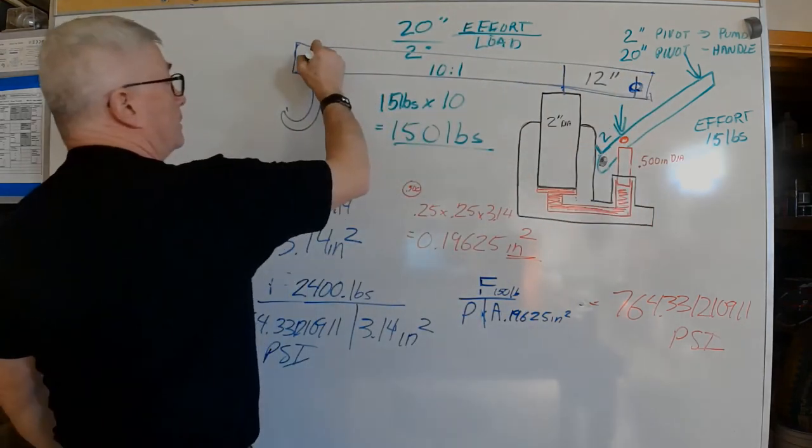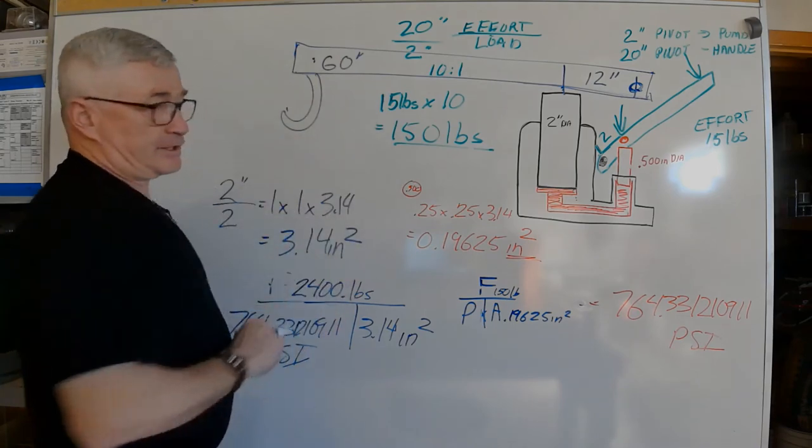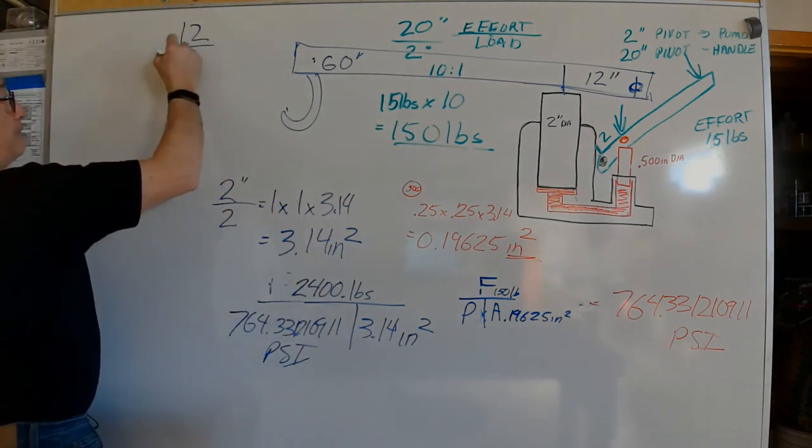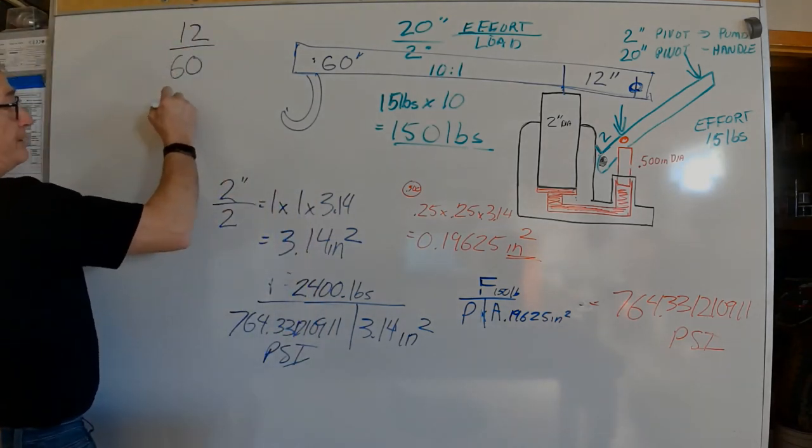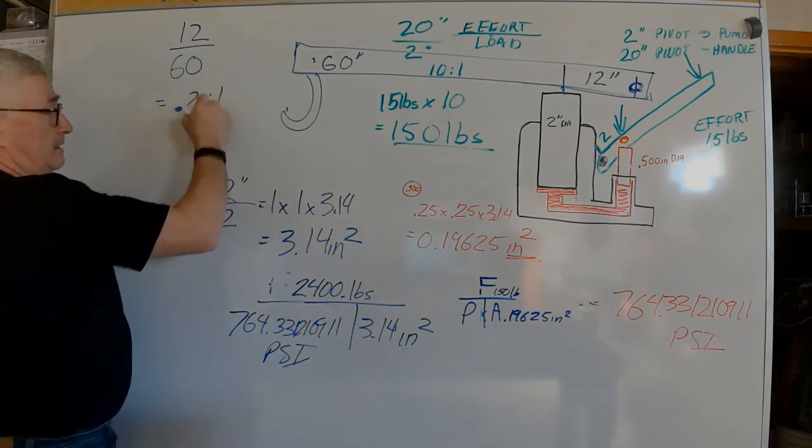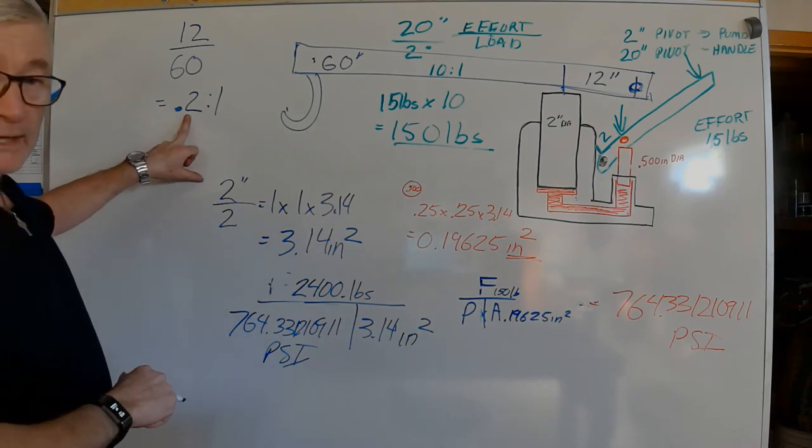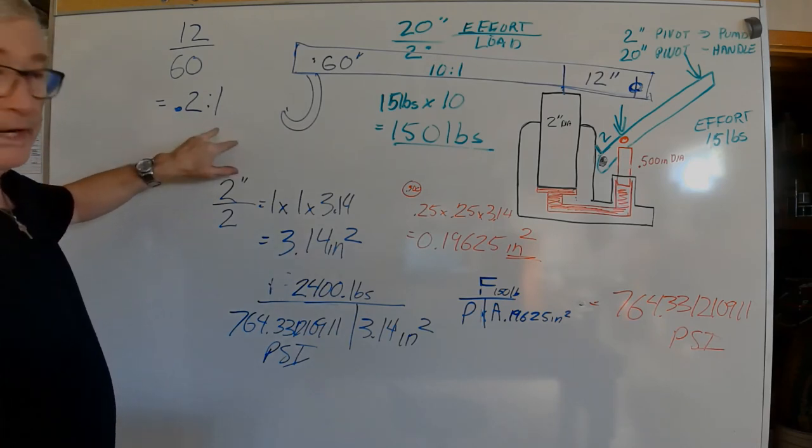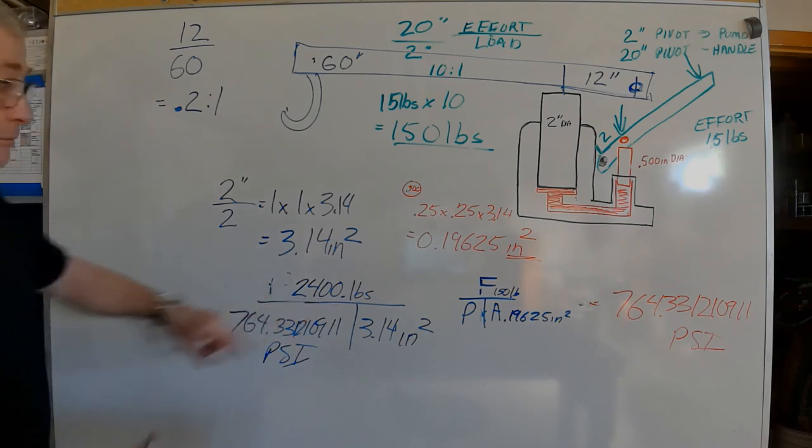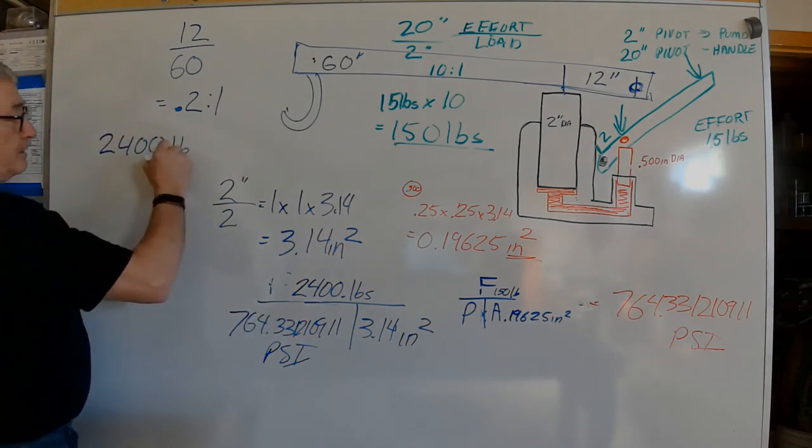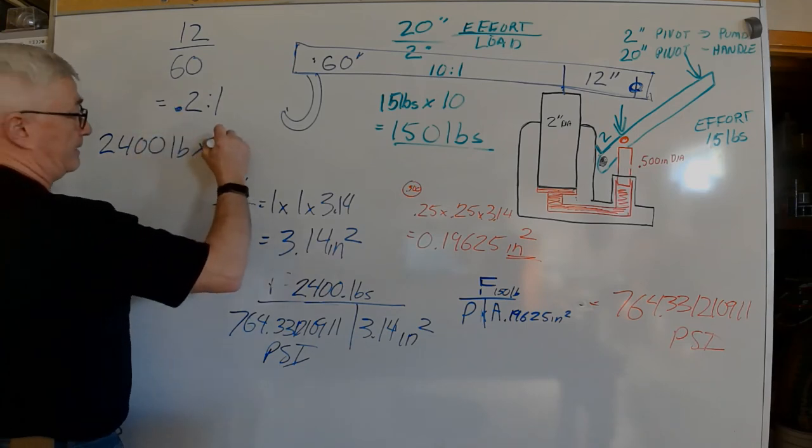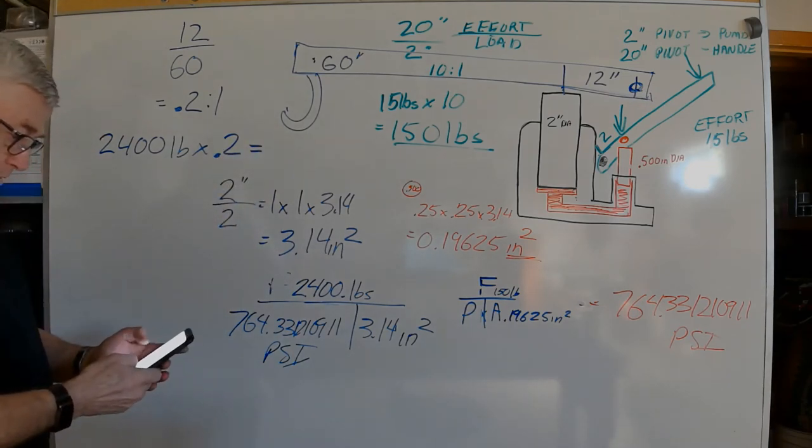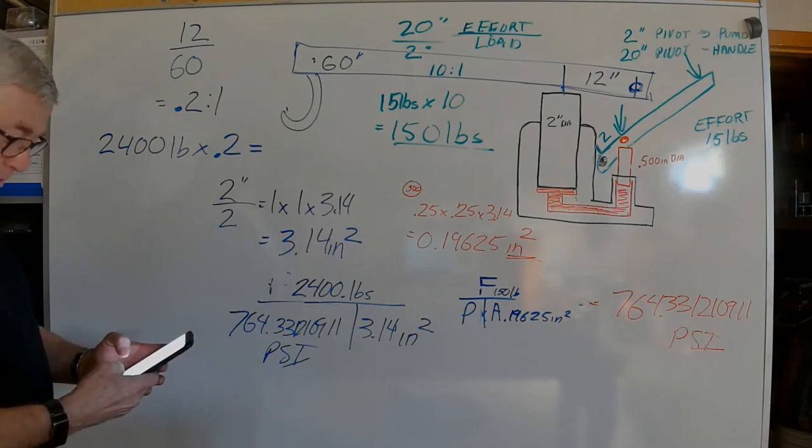The math does not change, it's still effort divided by load. So 12 divided by 60 equals 0.2. That is my mechanical advantage, 0.2 to 1. I would take my 2400 pounds and multiply it by my mechanical advantage of 0.2, which equals 480 pounds.